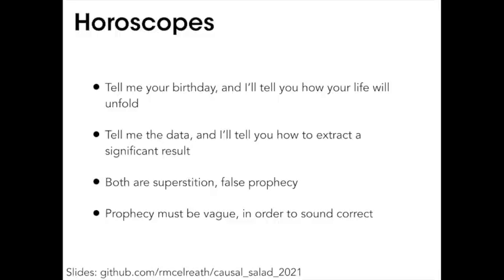If you read the horoscopes in newspapers — these things people used to read — the horoscopes are incredibly vague, because if all you share with another human being is a birthday, then only the vaguest sorts of predictions could be true. Statistics in the sciences has a feel to this. I call this the horoscope syndrome with statistics: you tell me your data, and I, as the consulting statistician, will tell you how to extract a significant result from it.